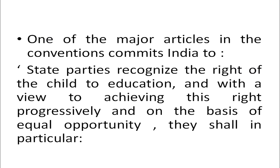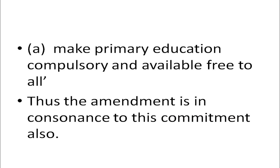One of the major articles in the Convention commits India — state parties recognize the right of the child to education, and with a view to achieving this right progressively and on the basis of equal opportunity, they shall in particular make primary education compulsory and available free to all. Thus, the 86th Amendment is in consonance with this commitment as well.